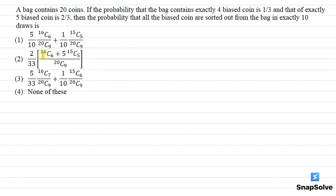Hello everyone, I am your teacher for this question. Let me explain this question to you now. A bag contains 20 coins. If the probability that the bag contains exactly 4 biased coins is 1/3, and that of exactly 5 biased coins is 2/3, then the probability that all the biased coins are sorted out from the bag in exactly 10 draws is?